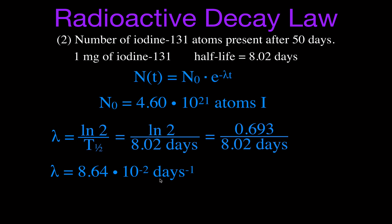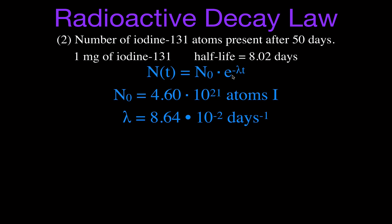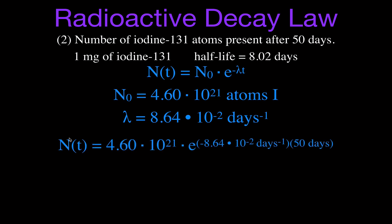Sometimes you'll see people convert the decay constant into per-second units when calculating activity in becquerel, but since our time is in days, we'll leave lambda in units of per day. When we plug into the equation, the days will cancel. Writing it out: Nₜ = 4.6×10²¹ × e^(−8.64×10⁻² day⁻¹ × 50 days). The units of days cancel, leaving just a number of nuclei. Whatever time unit you use, lambda and t must use the same unit.